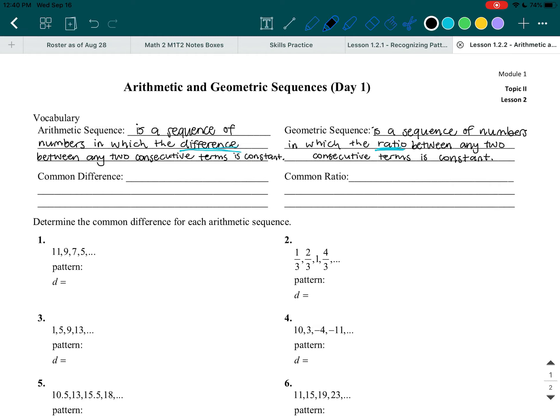So with that in mind, let's talk about common difference. Common difference is the constant. The constant is just a number that stays the same. So it's the number that is added to get the next term, and is typically represented by the variable.